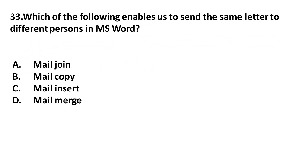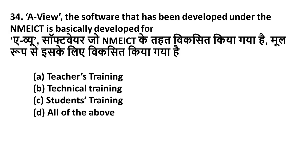Question 33: Which of the following enables us to send the same letter to different persons in MS Word? Option A: Mail join, Option B: Mail copy, Option C: Mail insert, Option D: Mail merge. It is known as Mail Merge — when we send the same letter to different persons in MS Word, we use Mail Merge. Option D is the right answer.